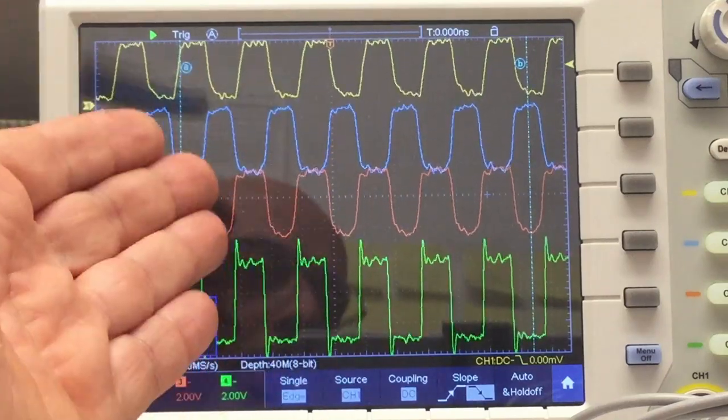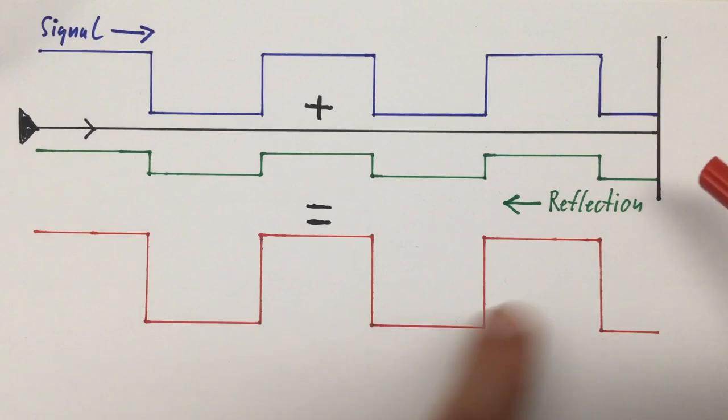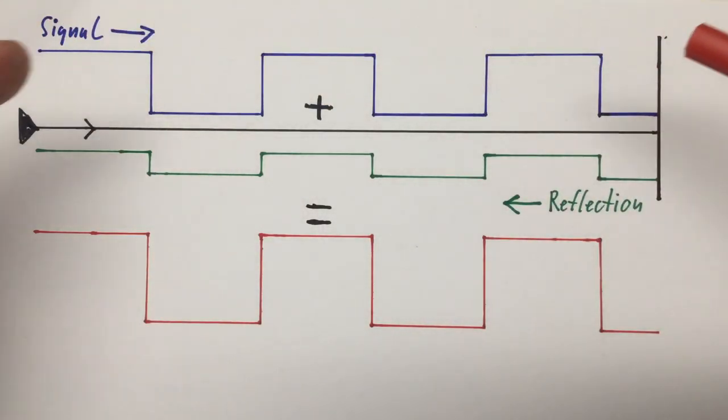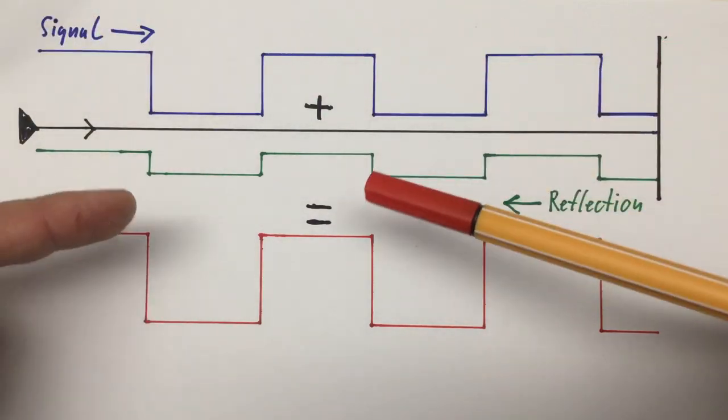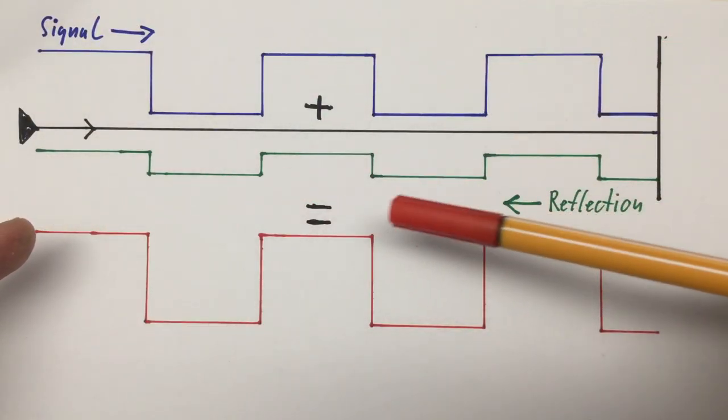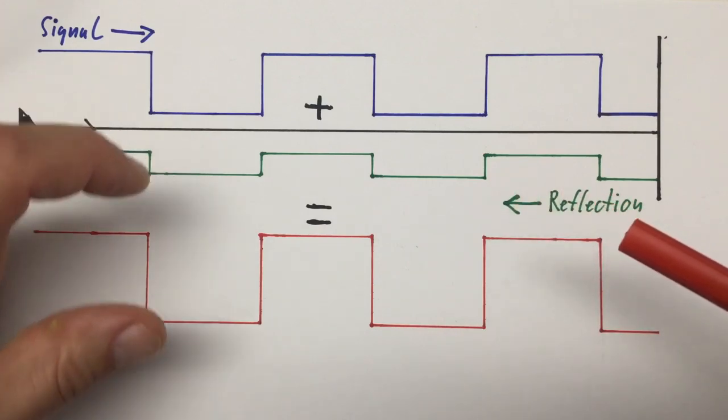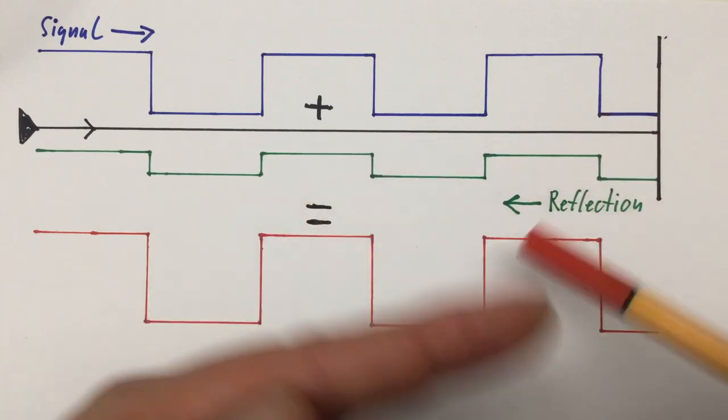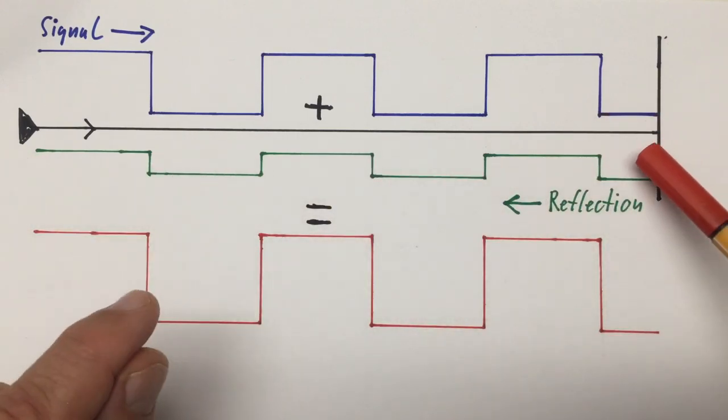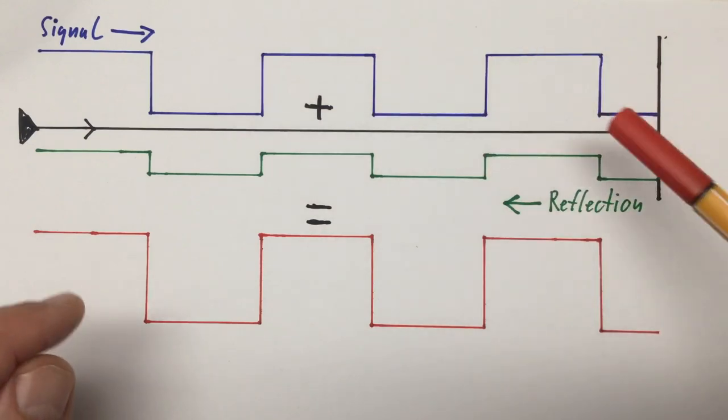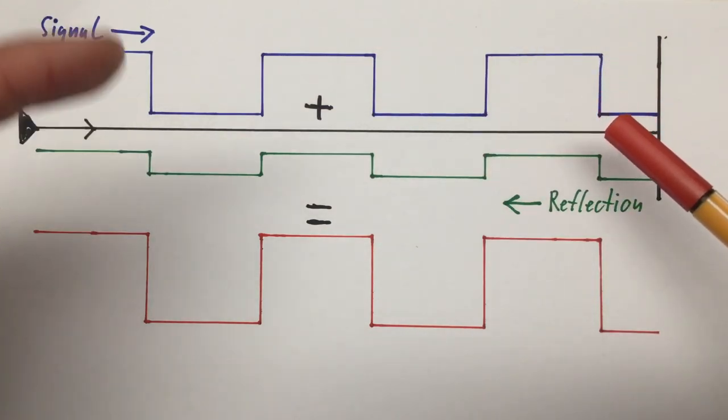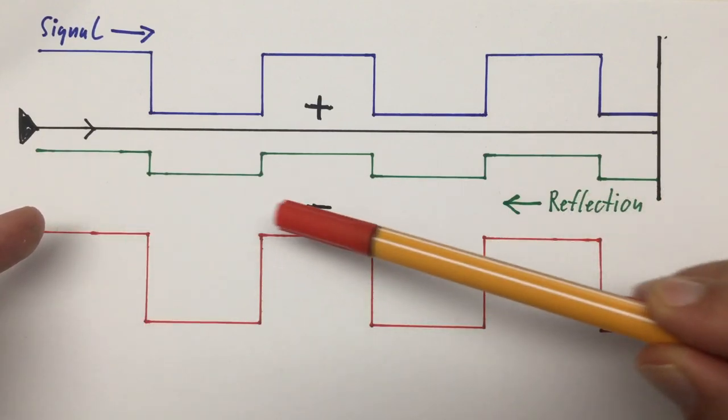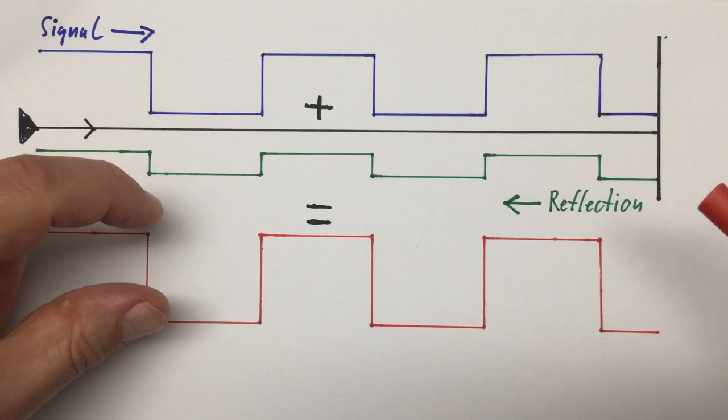But why isn't that happening at our original 10 megahertz? Why is the signal there more or less perfect? The answer is trivial: if our reflection is exactly in phase with our signal and you add both up, you get exactly the same signal form just with a slightly higher amplitude. If our reflection is exactly 180 degrees out of phase with our signal, then the highs hit the lows and the lows hit the highs, so our signal form still stays the same, just with a slightly lower amplitude.